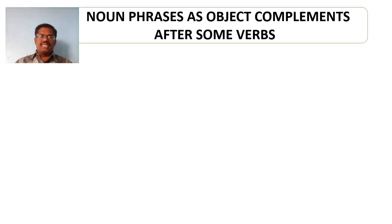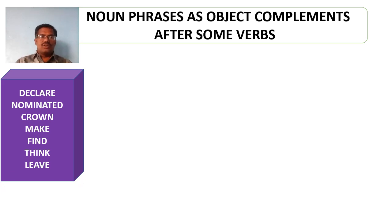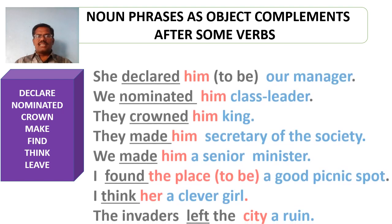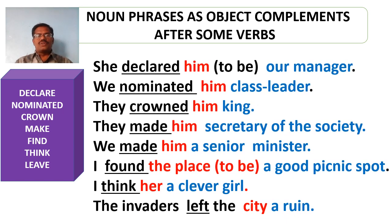Here are some more noun phrases which act as object complements after certain verbs. Those verbs include: declare, nominate, crown, make, find, think, live. The verbs are underlined in the sentences and the noun phrases which act as object complements are marked in blue ink. These include: our manager, class leader, king, secretary of the society, a senior minister, a good picnic spot, a clever girl, a ruin. The objects are marked in red ink.